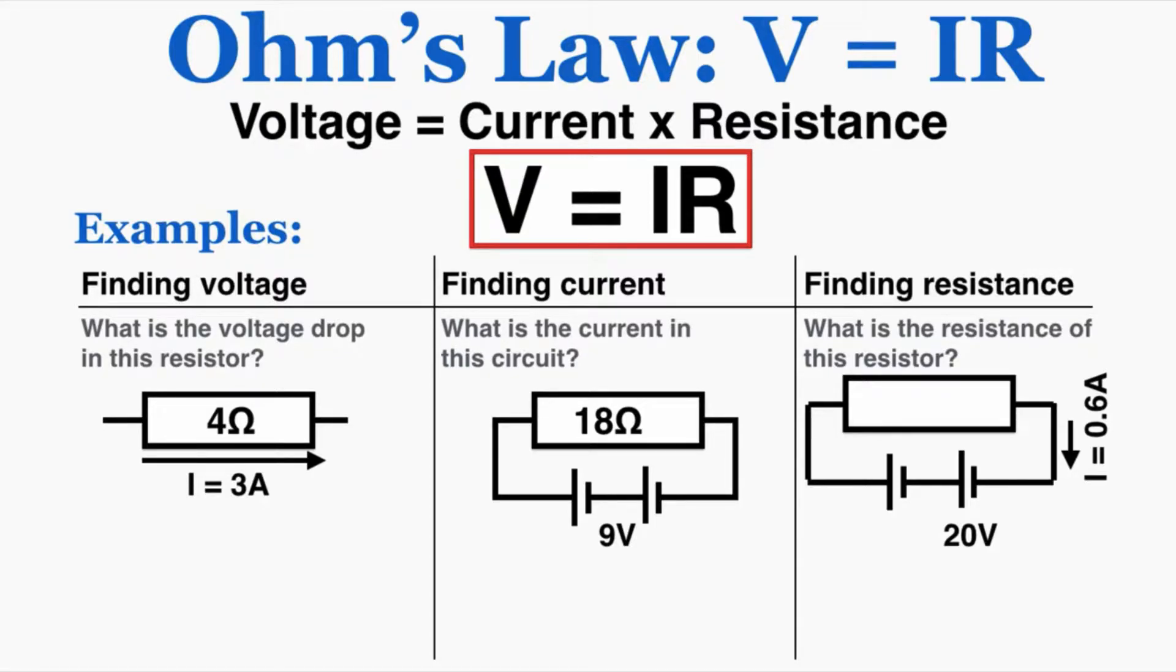I'm just going to run through and show you a few simple examples of Ohm's law, and then a more complex example. So Ohm's law can be used to find either voltage, current, or resistance. You can see that for each of these we have two of the three things that we need to understand what's missing.